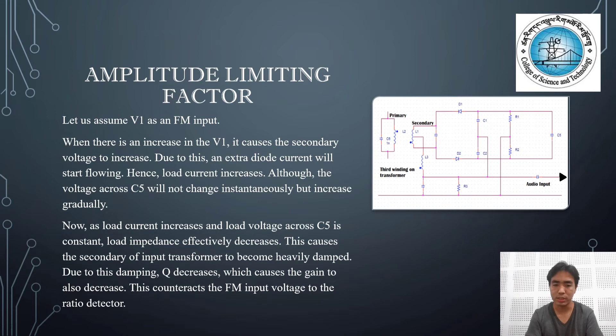This can be considered as constant. So as load current increases and load voltage across C5 is constant, the load impedance effectively decreases. This causes the secondary of the input transformer to become heavily damped. Due to this damping, Q decreases, which causes the gain to also decrease.